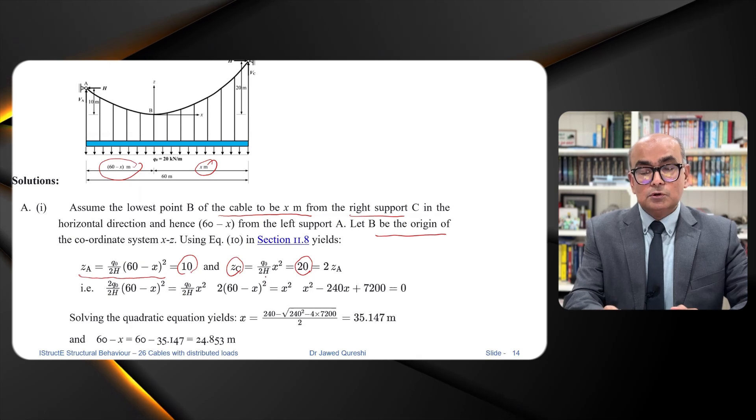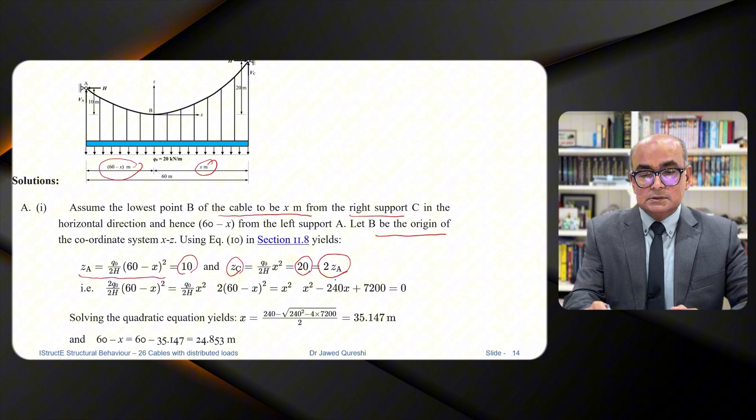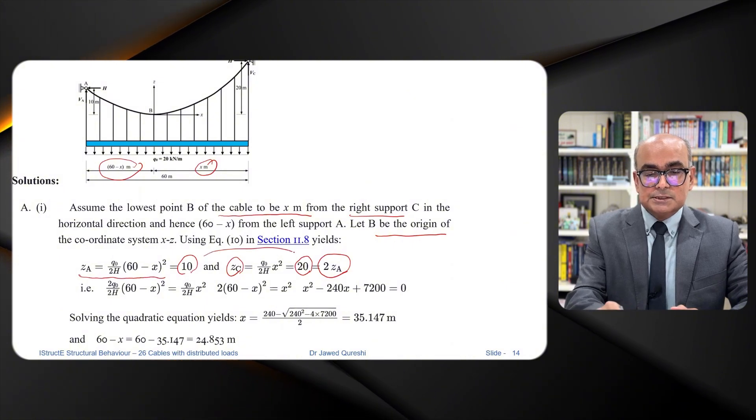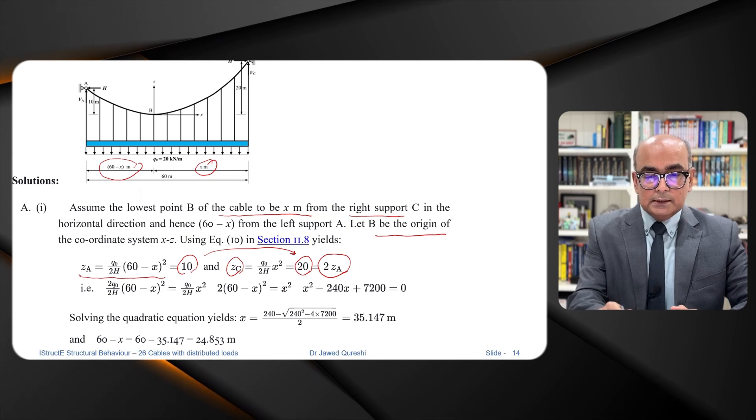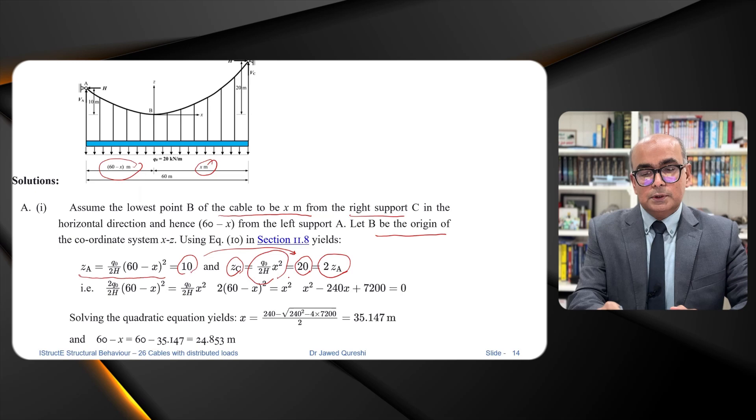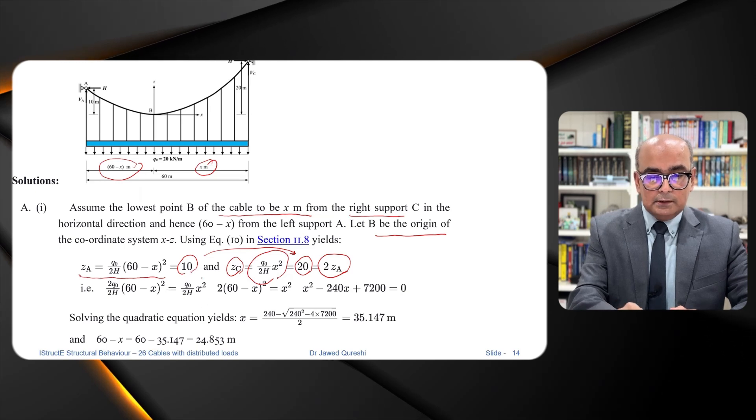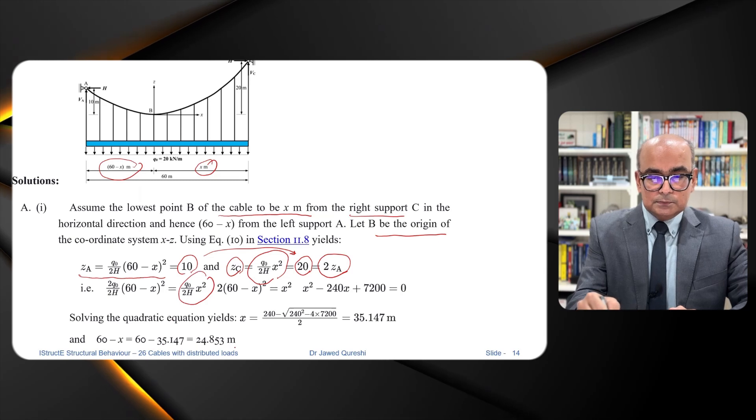So we can say that Q naught over 2H X square is equal to 2 times ZA because this is double of ZA. From here we can equate these two equations. So Q naught over 2H X square which is X square which is this one is equal to 2 times of this value which is here.